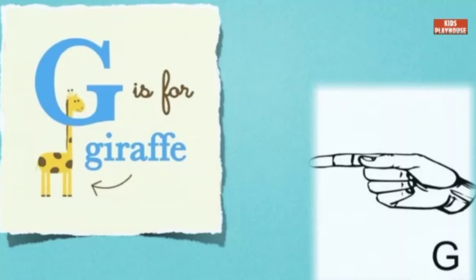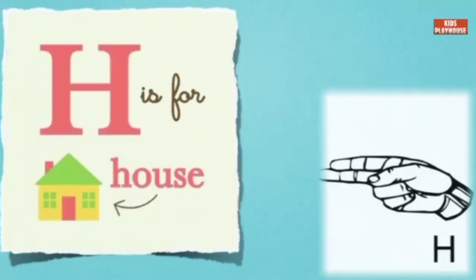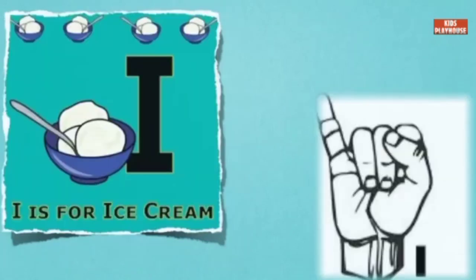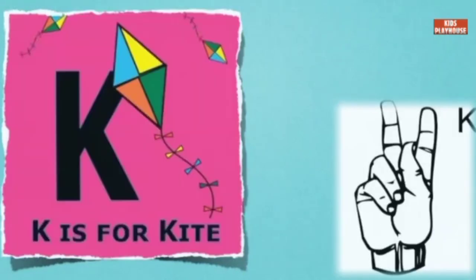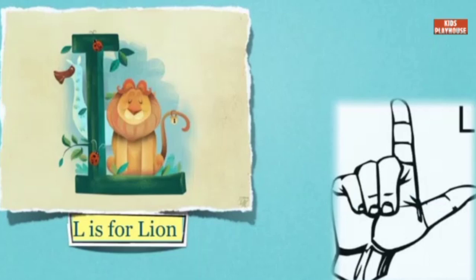G is for giraffe. H is for house. I is for ice cream. J is for jet. K is for kite. L is for lion.